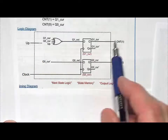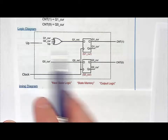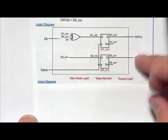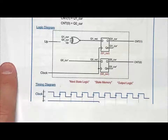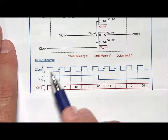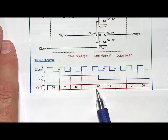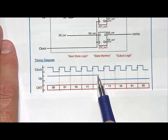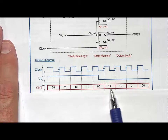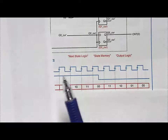I drew a box around the whole circuit: a clock comes in, one input 'up,' and two outputs for CNT. Looking at the timing diagram — when up is asserted it counts up: 00, 01, 10, 11, 00, and so on. When up goes low, it counts backwards: from 00 back to 11, 10, 01, 00. So that's a two-bit binary up-down counter.